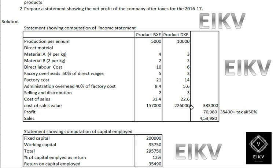Cost of sales in value is computed as cost per unit multiplied by total units manufactured: 1,57,000 for BXE and 2,26,000 for DXE. The total cost of sales comes to 3,83,000. Adding the profit of Rs. 70,980, the total sales price comes to 4,53,980.